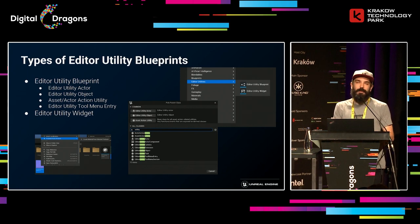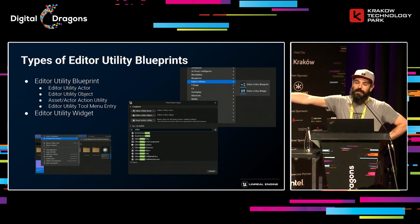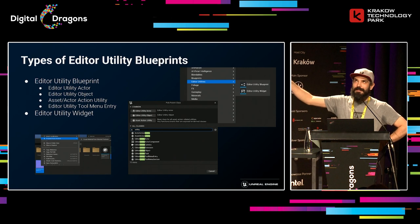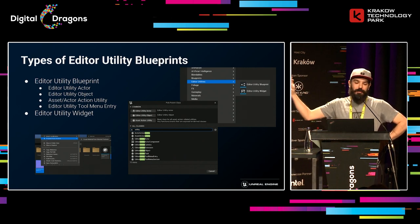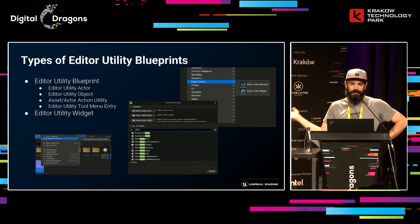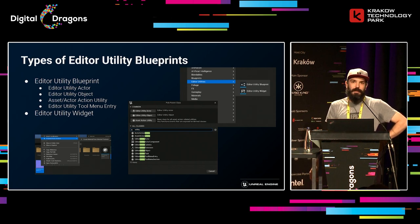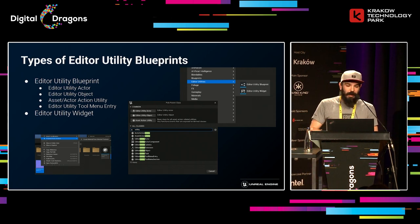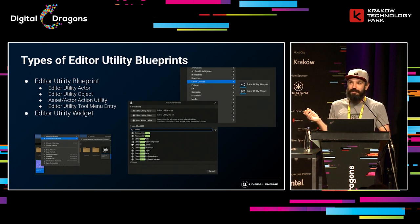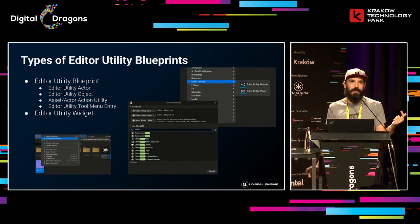Asset Action Utility and Actor Action Utility are things you can see in the context menu under 'scripted asset actions.' I have an entry called 'create material from selected texture.' You can create those actions for right-clicking assets or right-clicking actors, filter by class, and decide what happens when you click them. One of the coolest things I found is the Editor Utility Tool Menu Entry, which allows you to add buttons to the editor menus — like the file menu or toolbar.